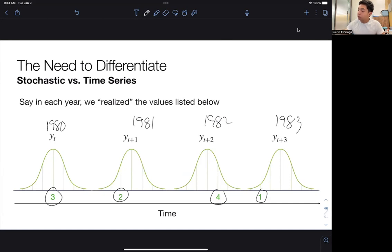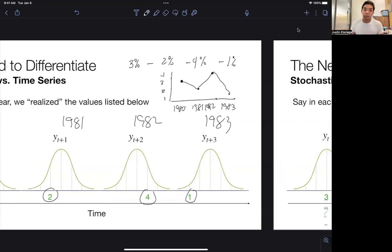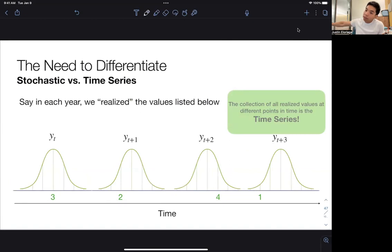So the time series is going to be 3%, 2%, 4%, 1%. So if we plot this, if this is 1980, 1981, 1982, 1983, 1, 2, 3, 4. In 1980, it was 3%. 1981, it was 2%. Then we have 4%. Then we have 1%. So if we plot it, this is our time series. It's the realized value of what went on in that year. The stochastic process is basically the collection of the PDFs across the years. So that's the difference between a time series and a stochastic process.